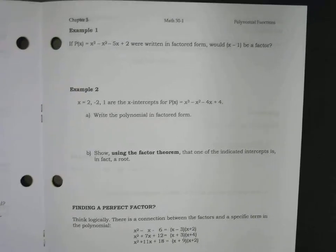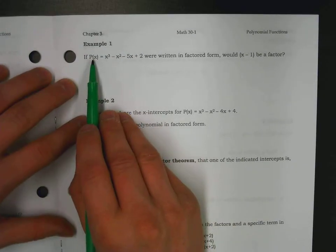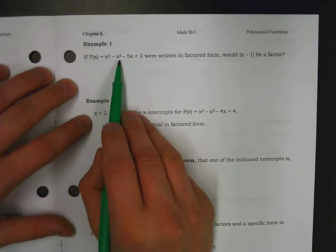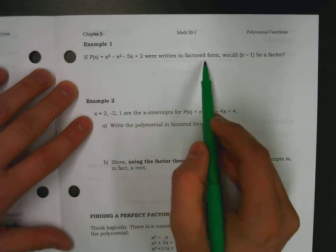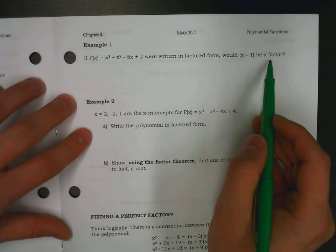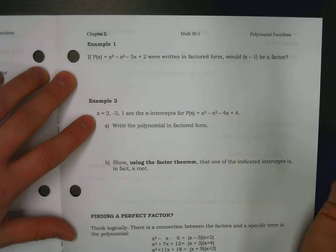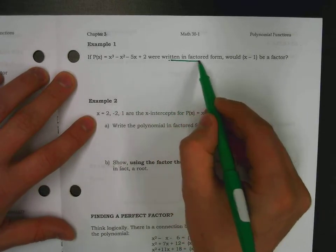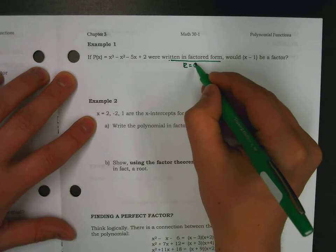Let's start to examine this in the context of a few examples where we've got a polynomial x cubed minus x squared minus 5x plus 2. If it were written in factored form, would x minus one be a factor? So, does this factor with an x minus one? How do we know? Well, if it was factorable, the remainder should be zero.